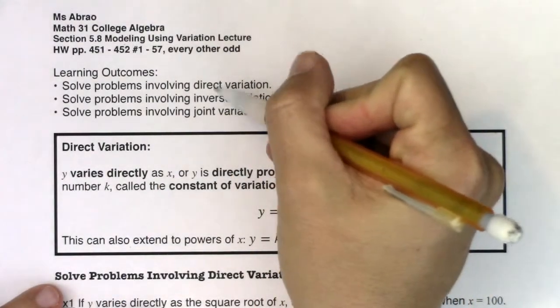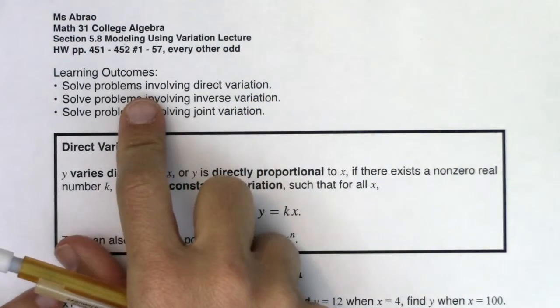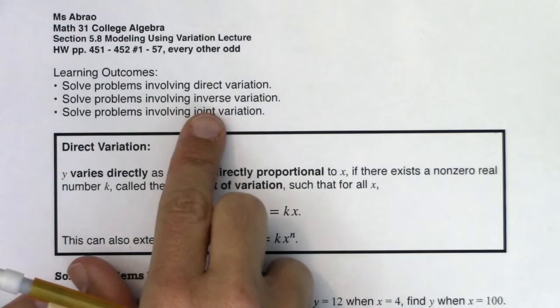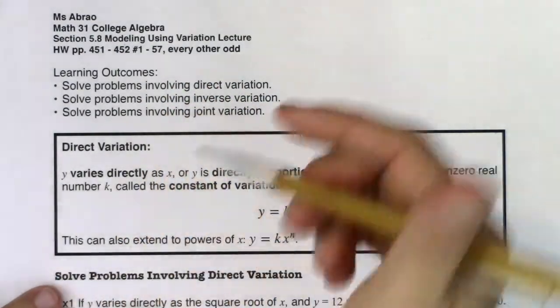The two different types are direct and inverse. So we're going to solve problems using direct variation, using inverse variation, and joint variation. Let me just give you a brief overview of this.